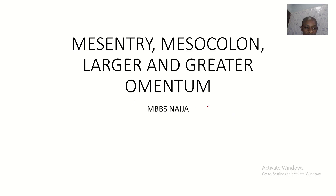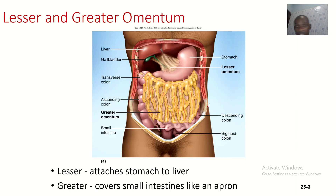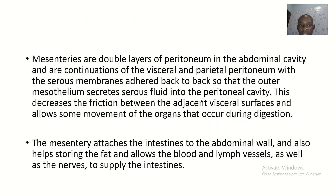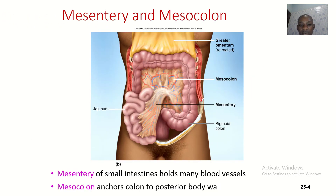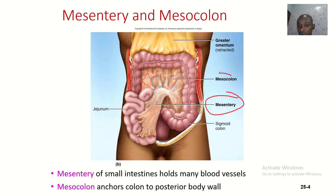What's up guys? We'll be talking about the mesentery, mesocolon, and the lesser and greater omentum. Basically, this is a greater omentum, this is a lesser omentum, and the mesenteries are what hold the intestines to the posterior abdominal wall. And this is a mesocolon too.